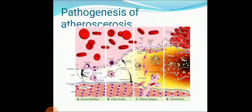This is a picture of the pathogenesis of atherosclerosis. Initially there is injury to the vessel wall, then formation of a fatty streak, then fibrous plaque formation composed of smooth muscle cells, RBCs, foam cells, and cholesterol clefts, and then formation of thrombus with aggregation of platelets.